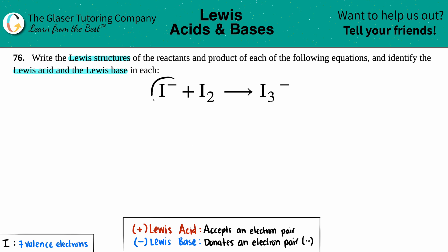Let's start with I⁻. That's just an iodine, and we know iodine has seven valence electrons, so I'm going to draw seven dots: one, two, three, four, five, six, seven. Remember, if it's a negative charge, that means it gained one electron — so it goes with that unpaired electron. Since it is negative, this iodine gained one electron, giving it the negative charge.